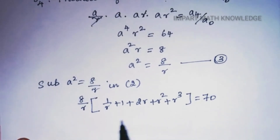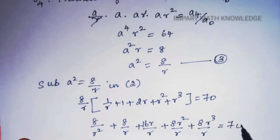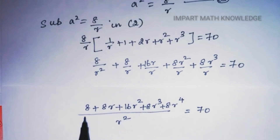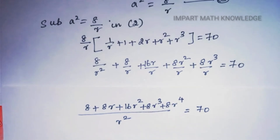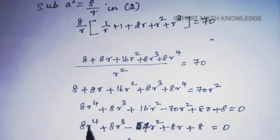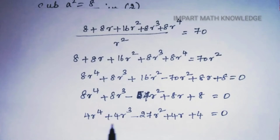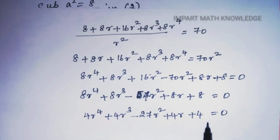Substituting a² = 8/r into equation 2: (8/r)(1/r + 1 + 2r + r² + r³) = 70. Taking LCM gives (8 + 8r + 16r² + 8r³ + 8r⁴)/r² = 70. Rearranging: 8r⁴ + 8r³ + 16r² − 70r² + 8r + 8 = 0, which simplifies to 8r⁴ + 8r³ − 54r² + 8r + 8 = 0. Dividing by 2: 4r⁴ + 4r³ − 27r² + 4r + 4 = 0.